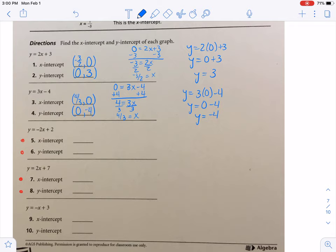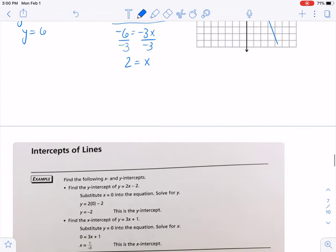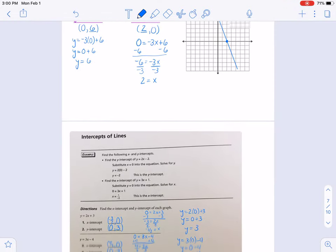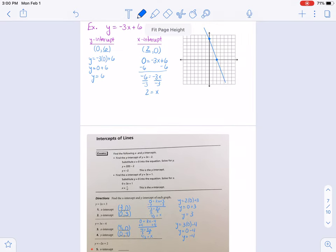I don't know if you see the pattern or shortcut. In each of our cases—we've done 3 so far—the y-intercept has been the same number that is there at the end. Here's the 3, there's the 3. Here's the -4, here's the -4.